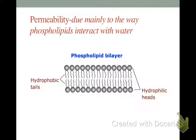Permeability is due mainly to the way the phospholipids interact with each other. You have the hydrophobic tails - hydrophobic means it fears water. Hydrophilic means it likes water. That's really important because it allows for the shape of the cell membrane. If it were both hydrophobic it would repel each other, so you need the hydrophilic heads on the outside.